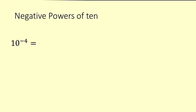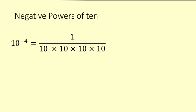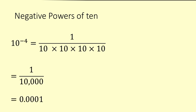Here's another one: 10 to the power of negative 4. You could quickly jot down what you think that might be — pause the video if it's going a bit fast. So we have 1 divided by 10 times 10 times 10 times 10, which is 1 divided by 10,000, which is 0.0001 — three zeros and then the 1.